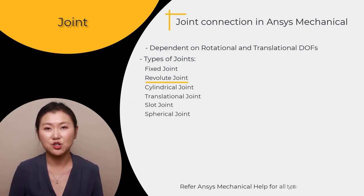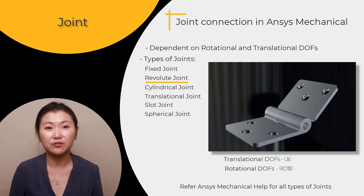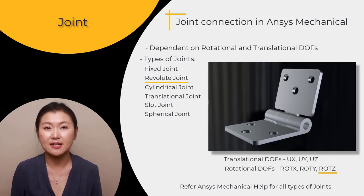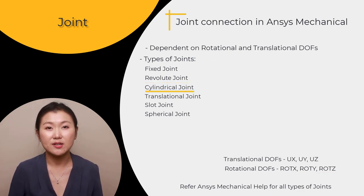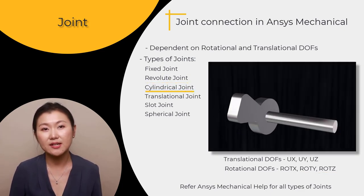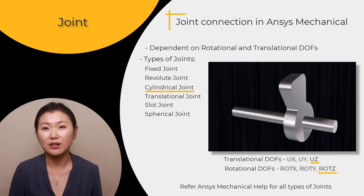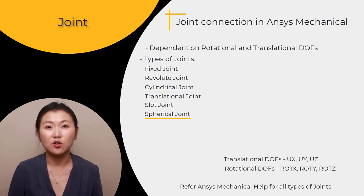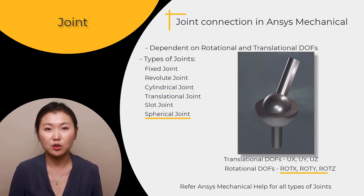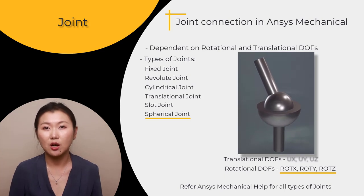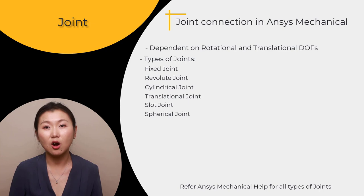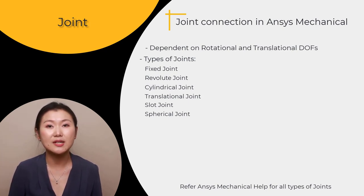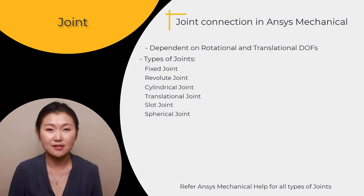For example, for the revolute joint, only the rotational degree of freedom along the z-axis is free and all other DOFs are constrained. For a cylindrical joint, only the translational and rotational DOFs in that direction are free. And for a spherical joint, all rotational DOFs are free but translational DOFs are constrained. Note that although joints are often used in nonlinear large deflection analysis, they can also be used in linear small deflection analysis.